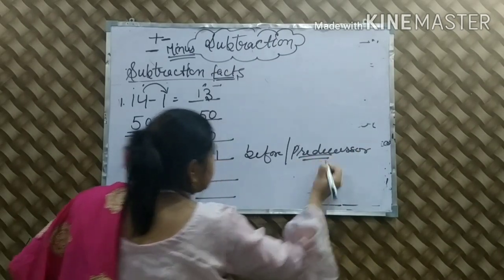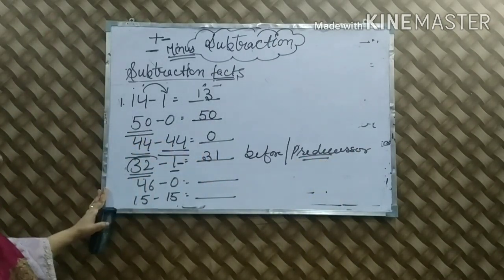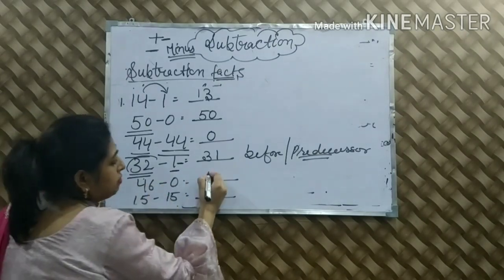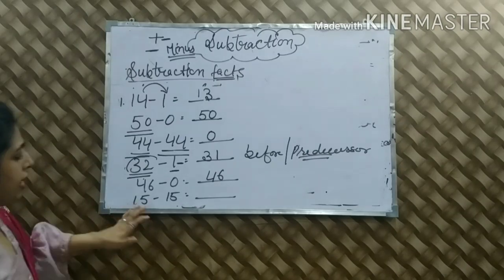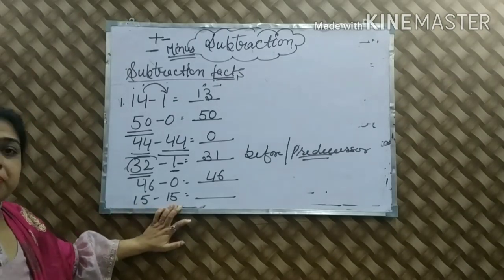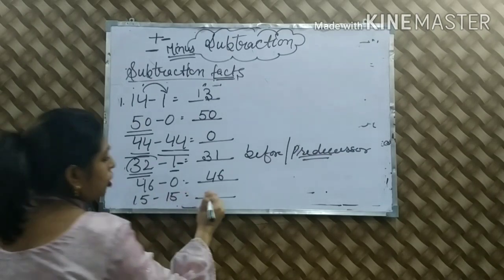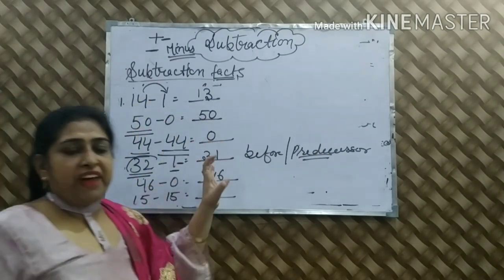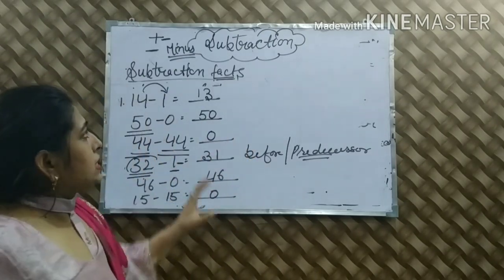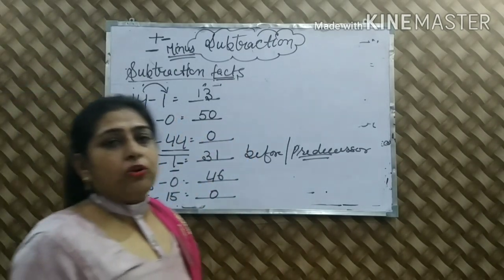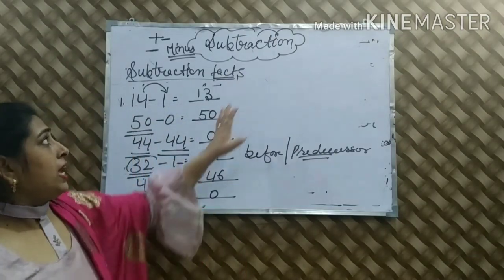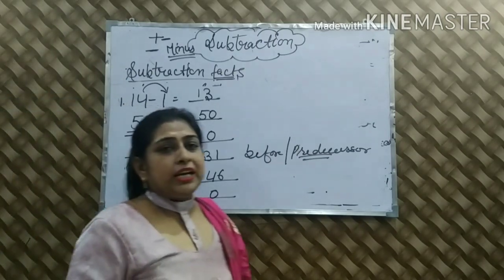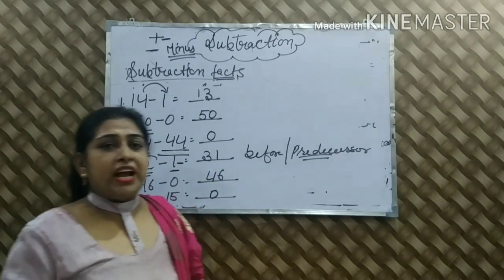Predecessor means the number before. Next: 46 minus zero — when zero is subtracted from a number, the number is itself. And last: when a number is subtracted from itself, the answer is always zero. So guys, these were the subtraction facts and related sums. If you have any doubt on this topic, you can comment in the comment box. Continue this topic — meet you in the next video. Till then, stay safe, stay home, and stay healthy.